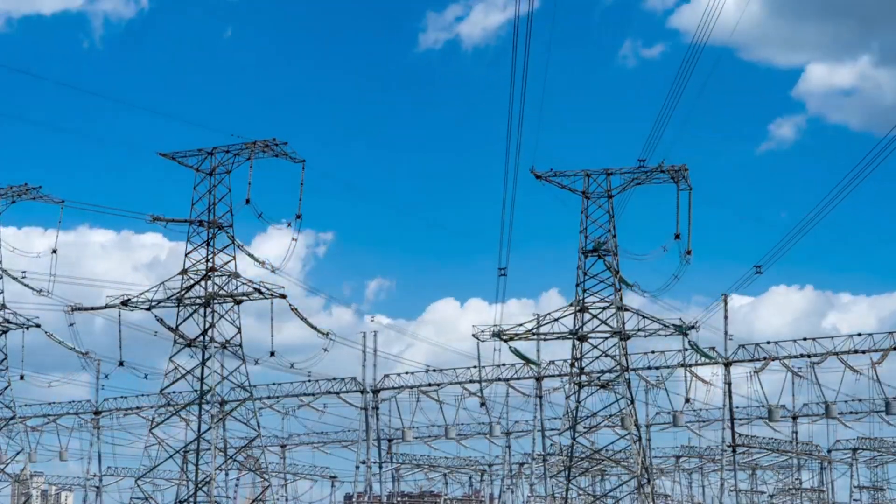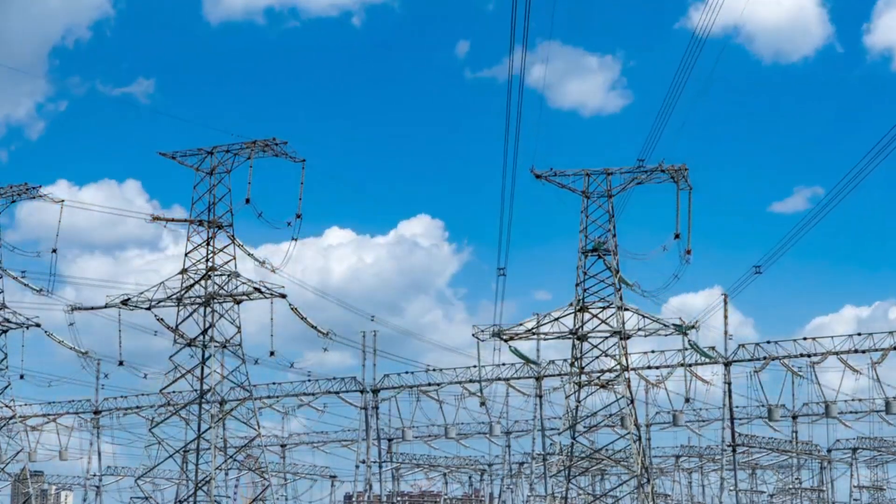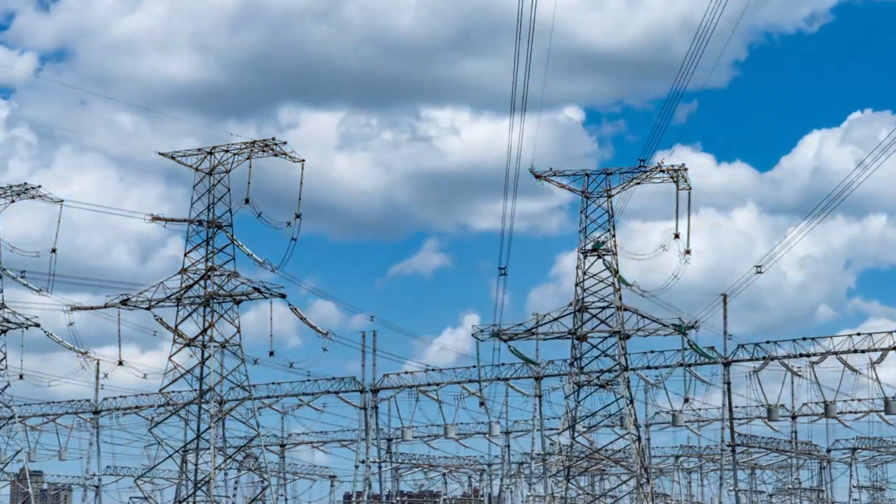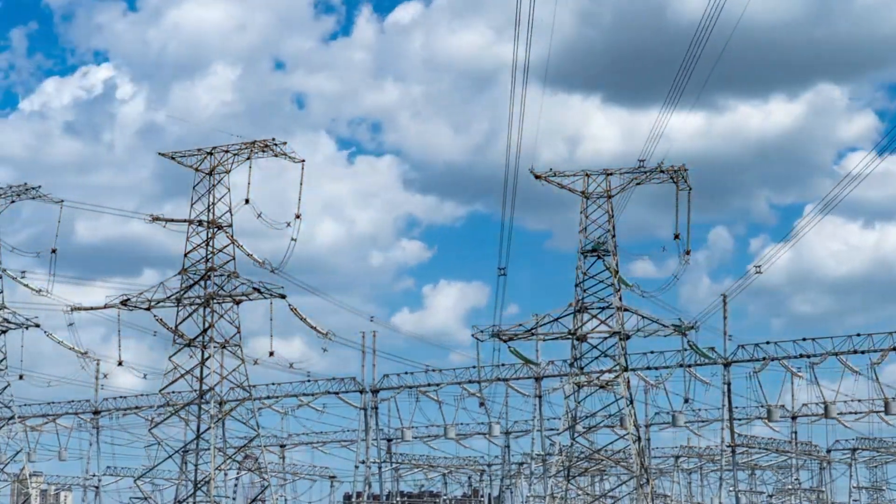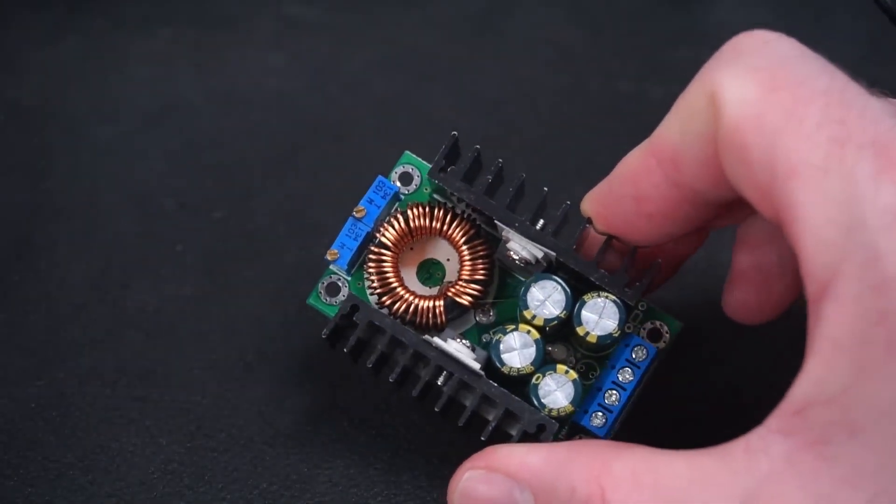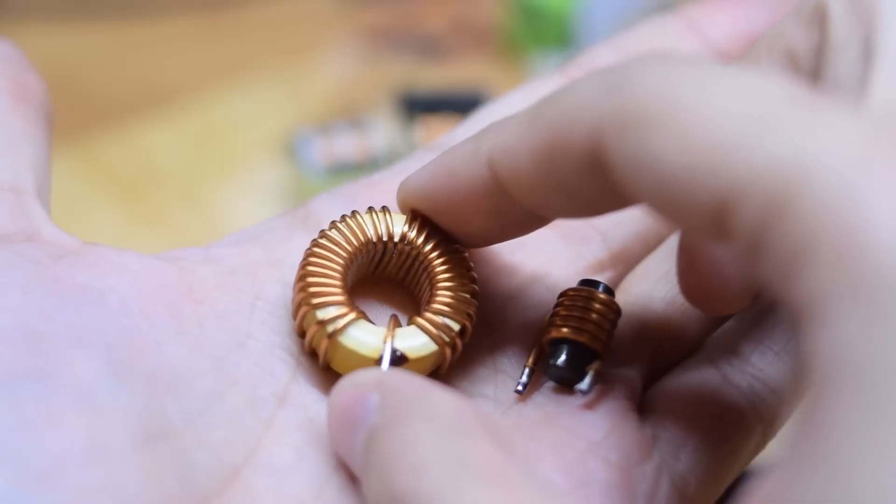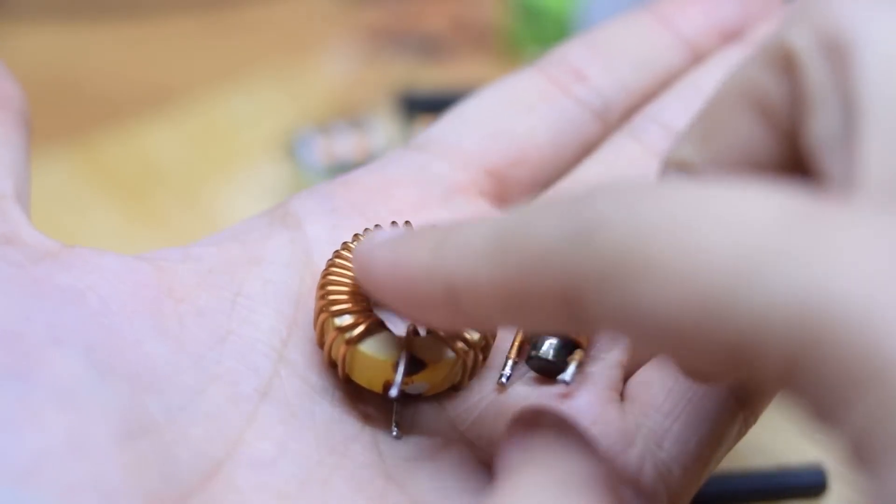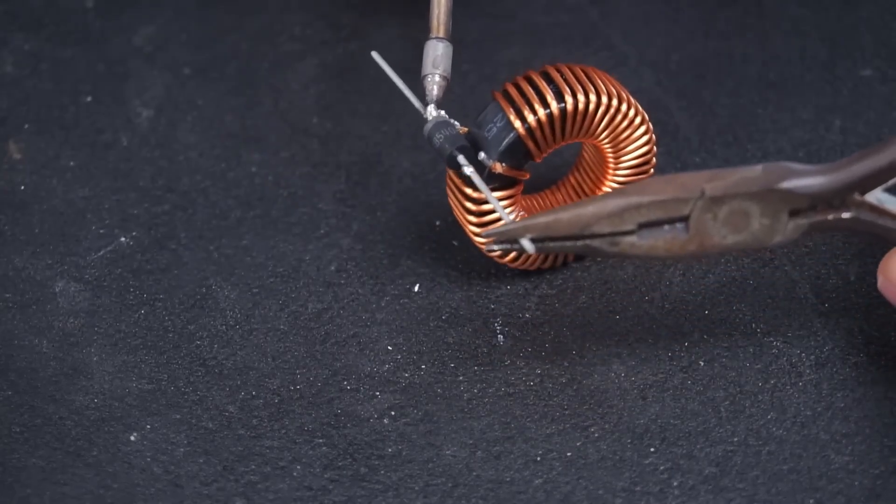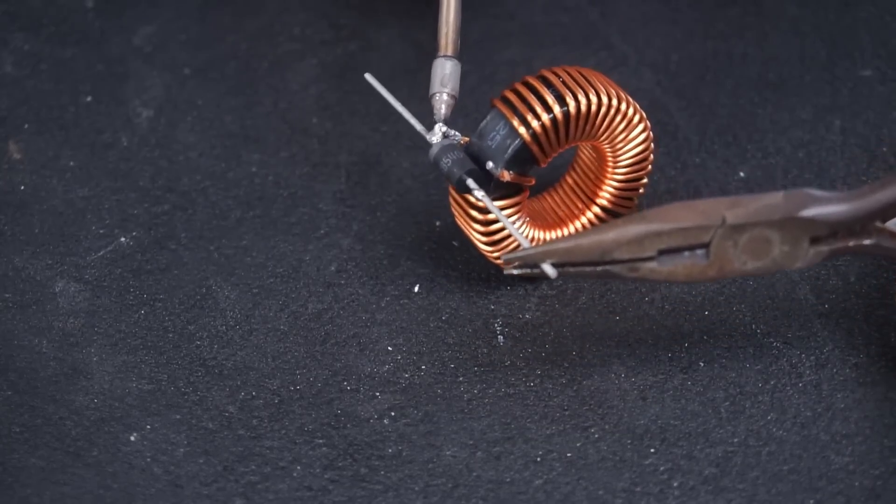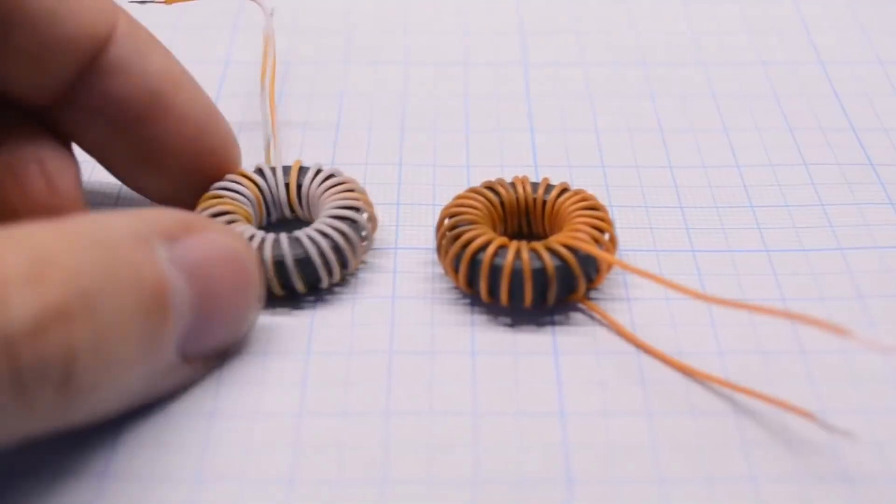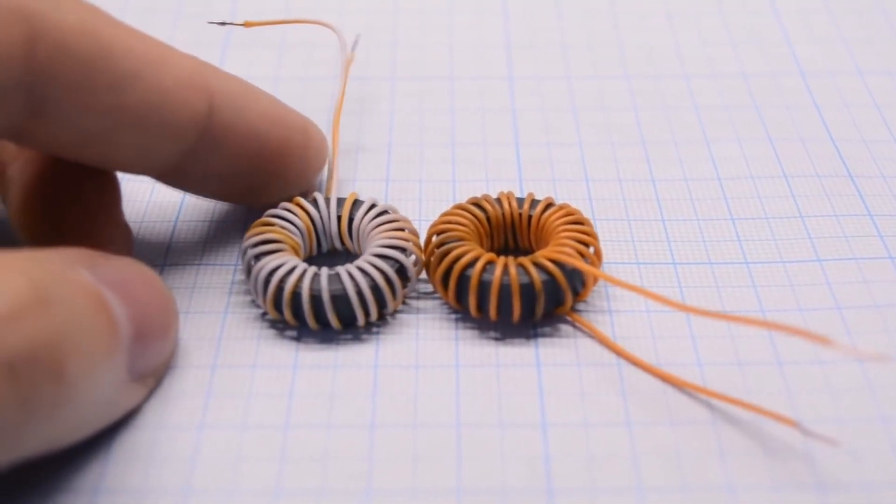The existence of self-induction poses technical challenges, but we've also learned to harness it beneficially, which explains the widespread use of inductors in electrical engineering. For example, the dependence of inductive reactance on frequency is quite useful. An inductor will allow low frequency or DC current to pass relatively unimpeded, but will significantly resist high frequency current. This makes inductors effective in filtering out high frequency noise from signals.